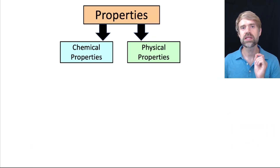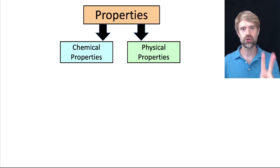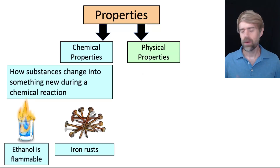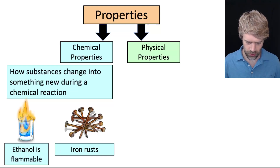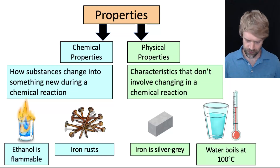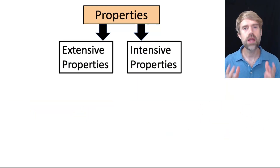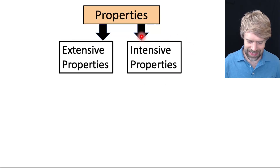Okay, let's get going. In the previous video, we looked at properties of substances and saw how they can be divided into two categories: chemical properties and physical properties. Chemical properties are about how substances change into something new during a chemical reaction — stuff like ethanol is flammable and iron rusts. On the other hand, physical properties don't involve changing in a chemical reaction — things like iron is silver gray and water boils at 100 degrees Celsius.